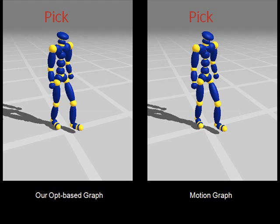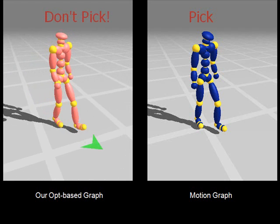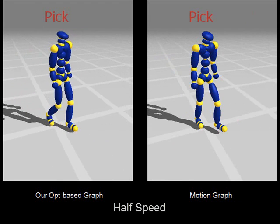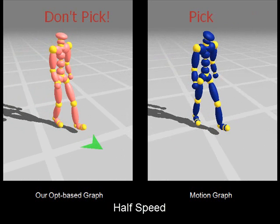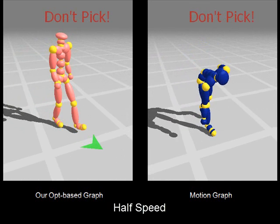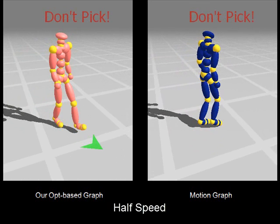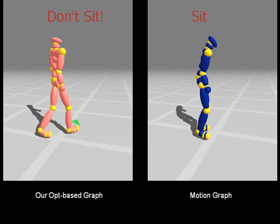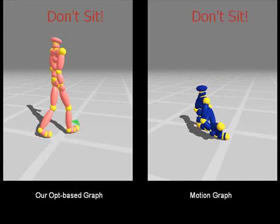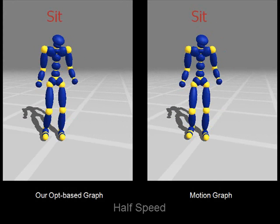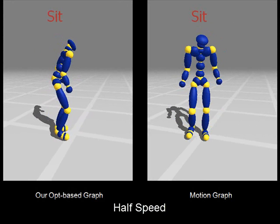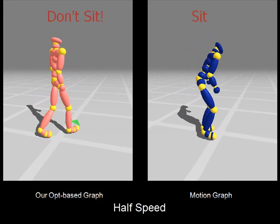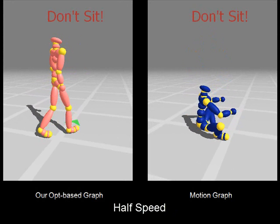An optimization-based graph also allows us to stop the current behavior if the user changes her mind. For example, stopping a picking motion, or stopping a sitting down motion. While motions generated with an optimization-based graph can change behaviors abruptly, the motions generated with a motion graph must complete the sitting behavior before changing to a walking behavior.